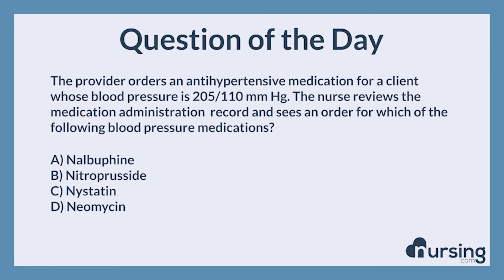The nursing category is pharmacology. The NCLEX category is pharmacology and parenteral therapies. The provider orders an antihypertensive medication for a client whose blood pressure is 205 over 110 mmHg. The nurse reviews the medication administration record and sees an order for which of the following blood pressure medications.